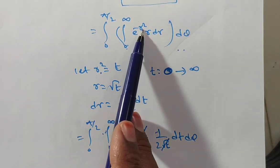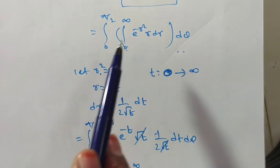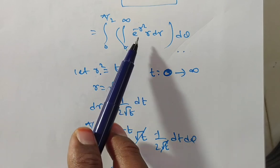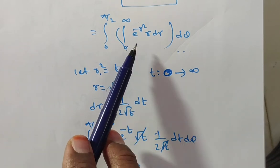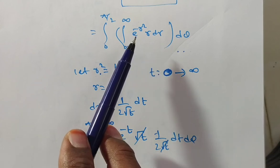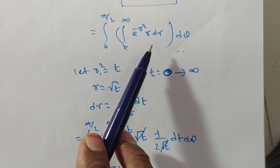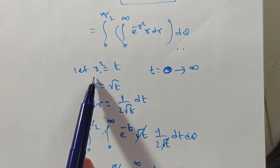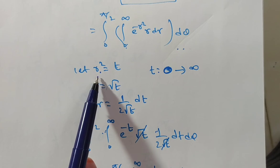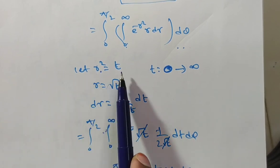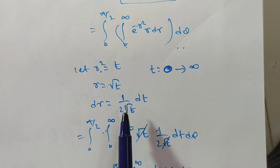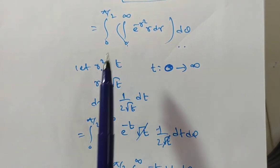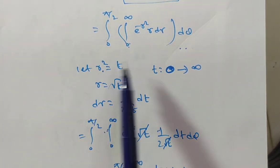In method 2, let r squared equal to t. Then r equals root t, and dr equals 1 by 2 root t dt. Now we substitute the t values and limits: when r is 0, t is also 0; when r is infinite, t is also infinite.